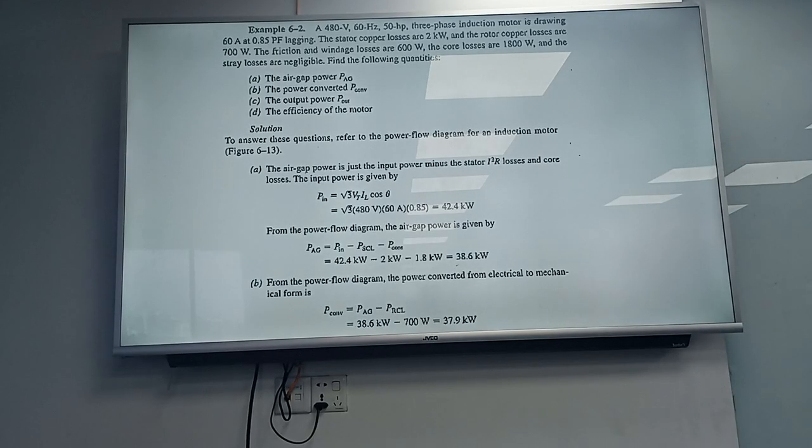A 480V 60Hz, 50hp, 3-phase induction motor is drawing 60 amperes at 0.85 power factor lagging. The stator copper losses are 2kW and the rotor copper losses are 700W. The friction and windage losses are 600W, the core losses are 1800W, and the stray losses are negligible. Find the following quantities. What is the air gap power?